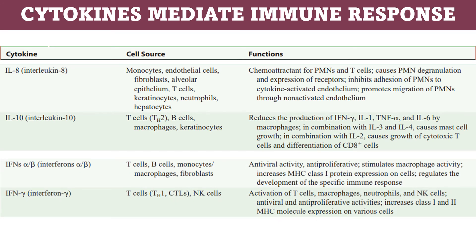Interferon alpha/beta arises from T cells, B cells, monocytes, and fibroblasts. Functions include antiviral activity, antiproliferative effects, stimulation of macrophage activity, increased MHC class I protein expression on cells, and regulation of the development of specific immune responses. IFN-gamma arises from NK cells and T cells. It activates T cells, macrophages, neutrophils, and NK cells; has antiviral and antiproliferative activities; and increases class I and class II MHC molecule expression.